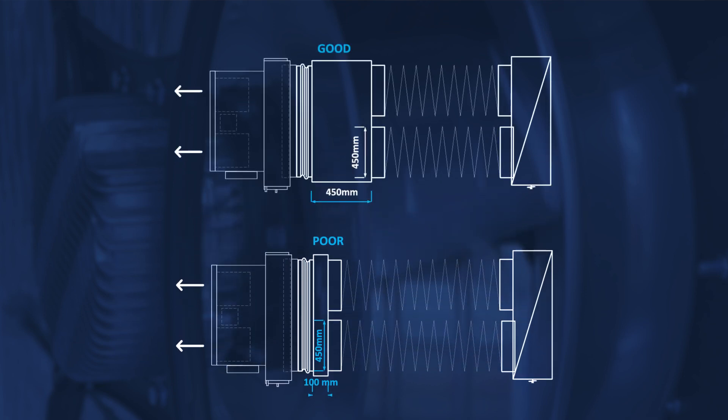As a rule of thumb, the return air plenum should be as deep as the flexible connection is wide. For example, if a 450 millimeter return air flexible duct is used, the return air plenum should also be 450 millimeters deep.